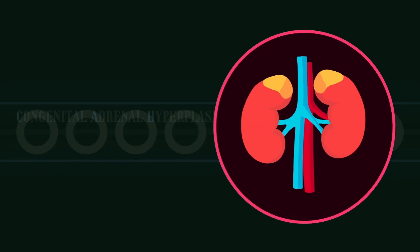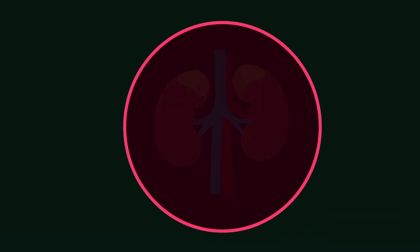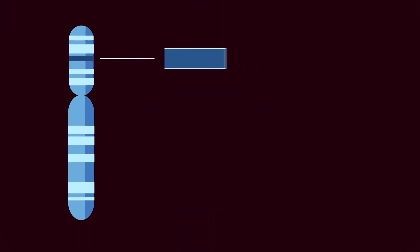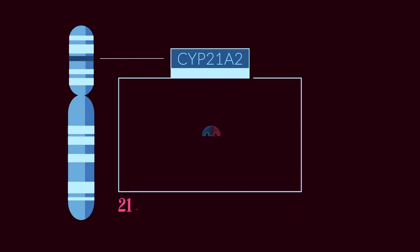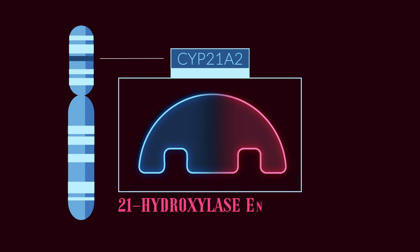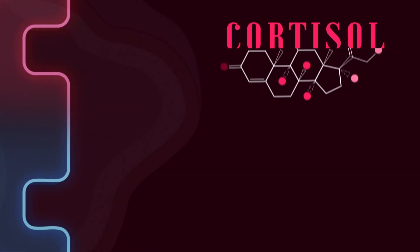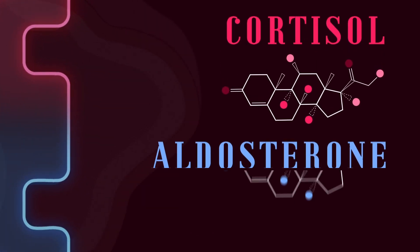At conception, the chromosome set for females with CAH begins with the typical 46XX. An inherited mutation in the CYP21A2 gene causes a deficiency of the enzyme 21-hydroxylase. This enzyme is found in the adrenal glands, where it helps produce cortisol and aldosterone.